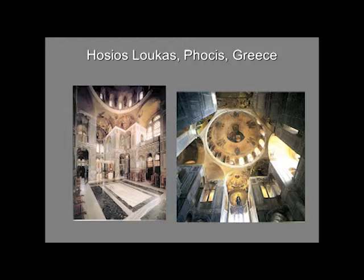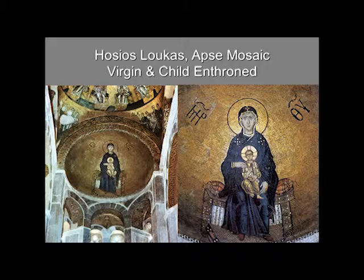Looking again at Hosios Loukas, we look up to the central dome and see Christ Pantocrator, surrounded by angels. Then we look at the conch of the apse — the half dome over the altar — and see the image of the Virgin and Child enthroned, Mary as Theotokos, the God-bearer. You may notice that the iconography is very similar to the famous image over the half dome in the conch of the apse at Hagia Sophia.